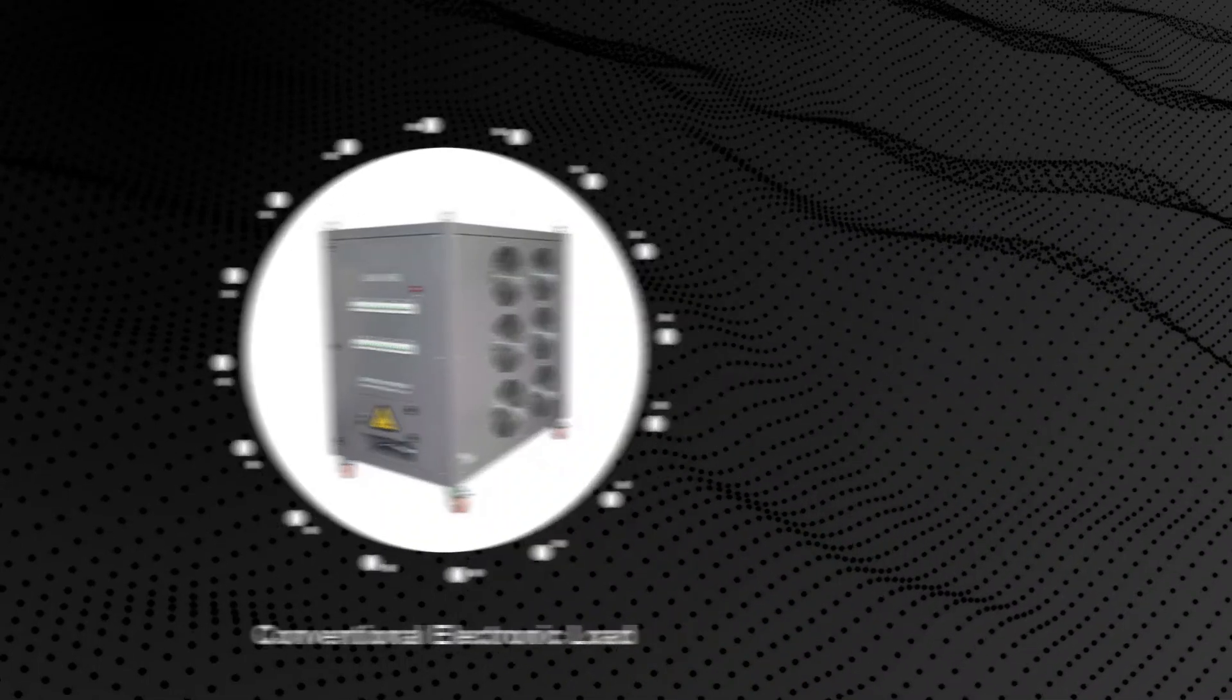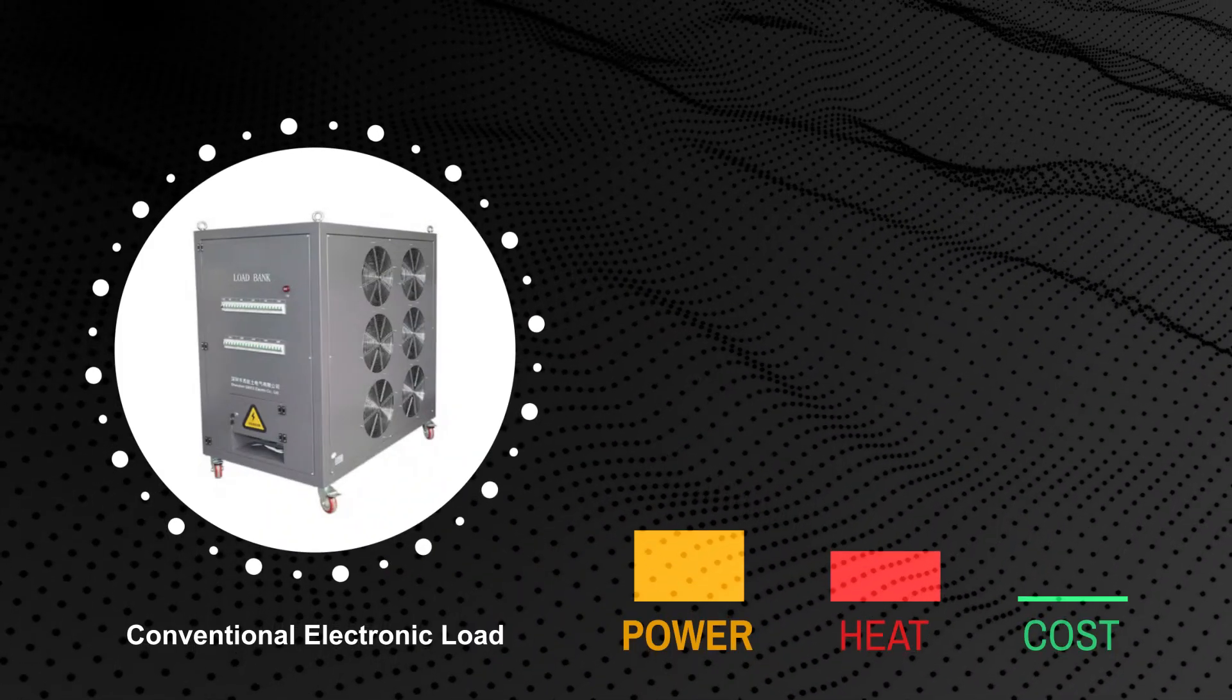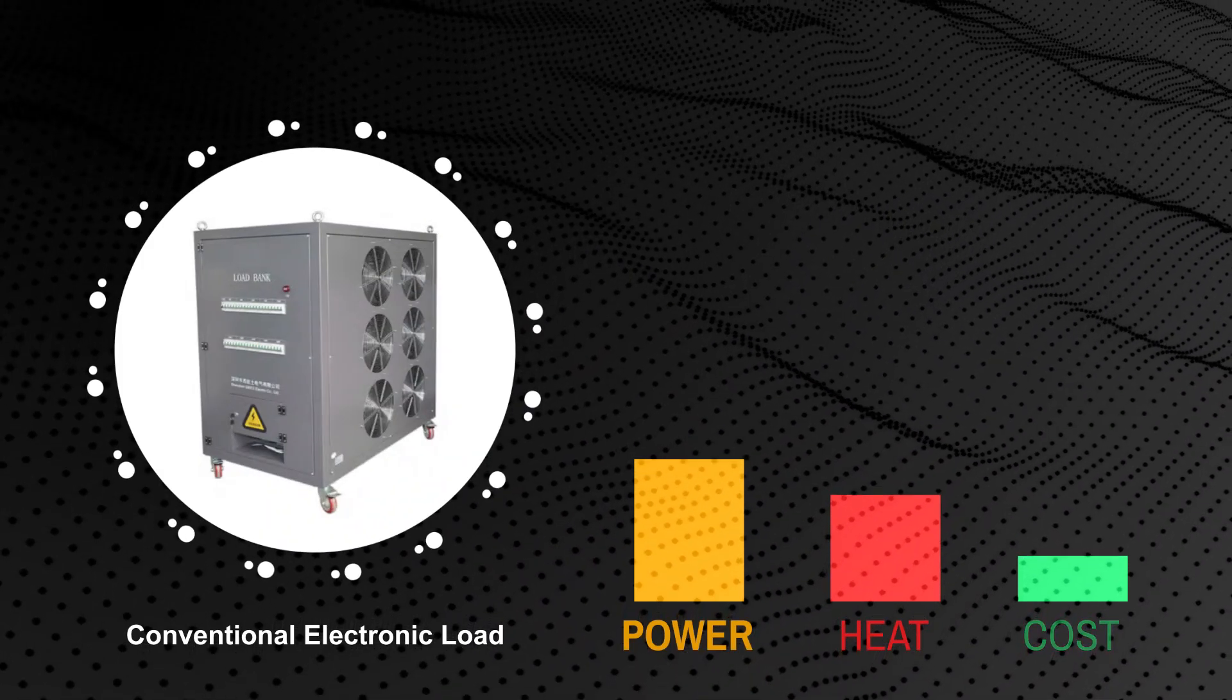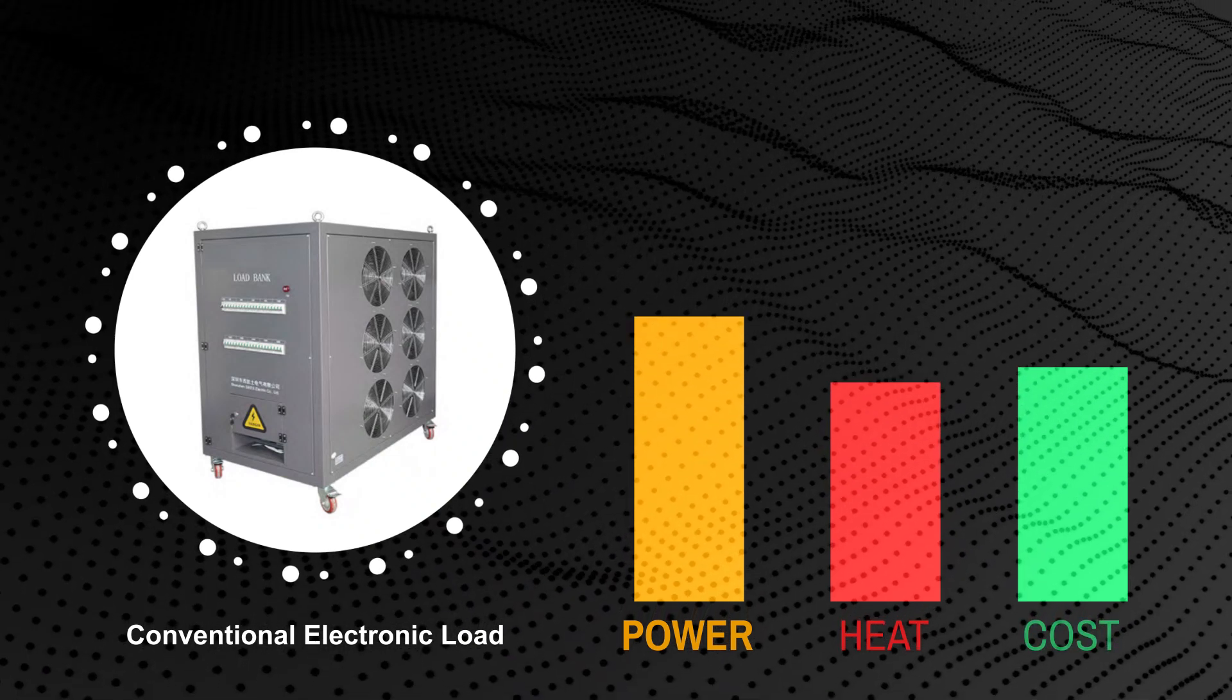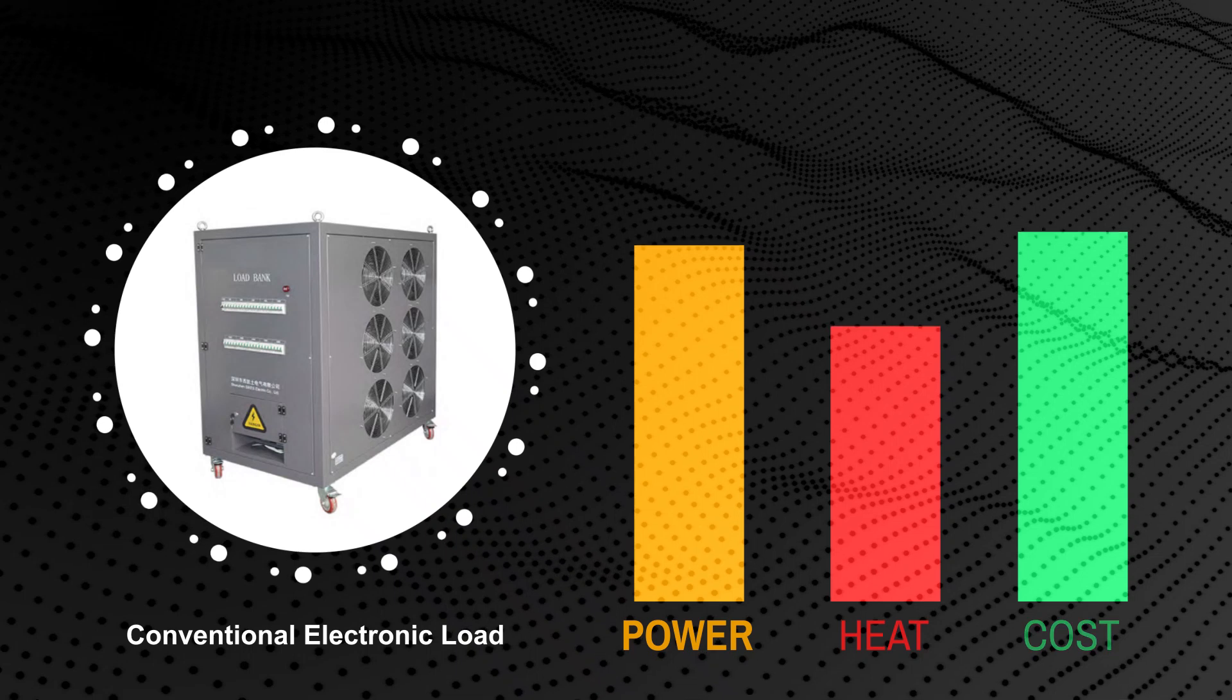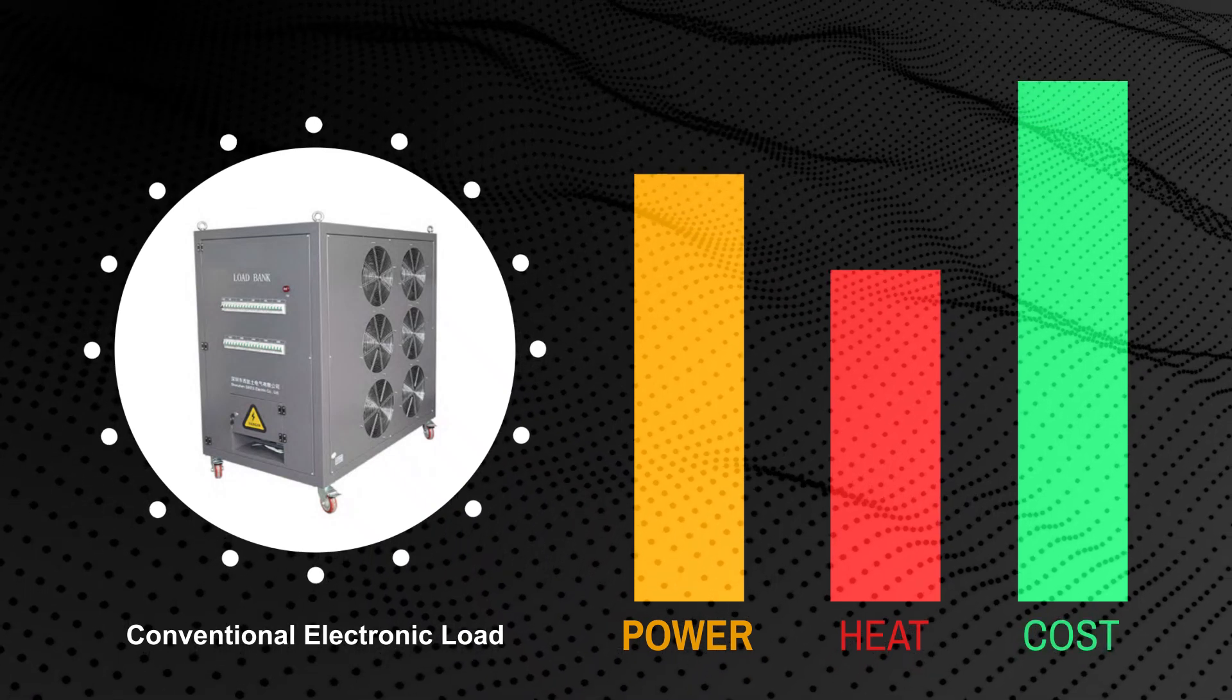Conventional electronic loads simply dissipate power as heat. At low power levels this is hardly noticeable, but as power levels increase into the kilowatt or megawatt range typically seen with solar panels or EV traction motors and batteries, the energy and cooling costs become excessive.